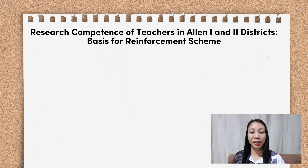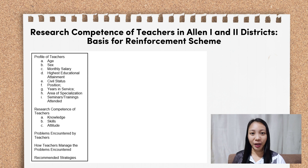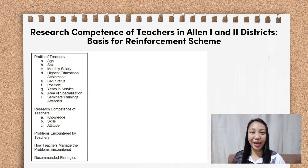Let us now proceed in making the paradigm model. In the first figure, you will list down the research questions starting with the profile — so we have: profile of the teachers: one, age; two, sex; three, monthly salary; four, highest educational attainment; five, civil status; six, position; seven, years in service; eight, area of specialization; and nine, seminars or trainings attended. Then the next one: level of research competence of teachers — one, knowledge; two, skills; and three, attitudes.